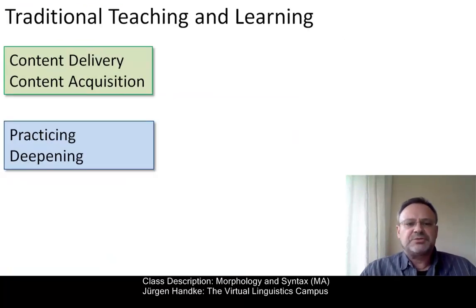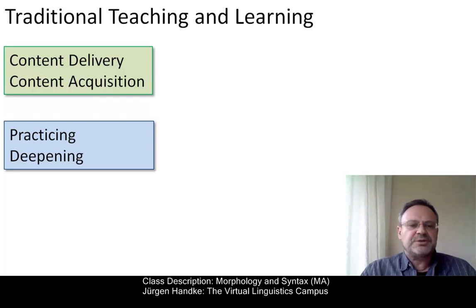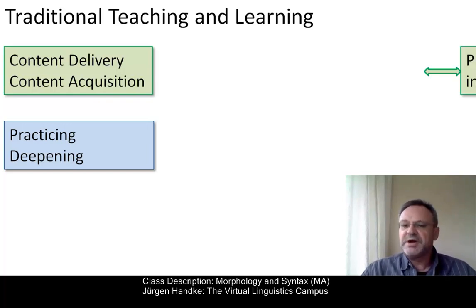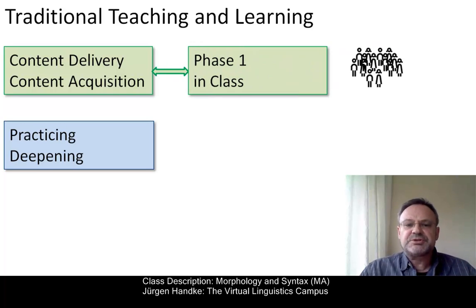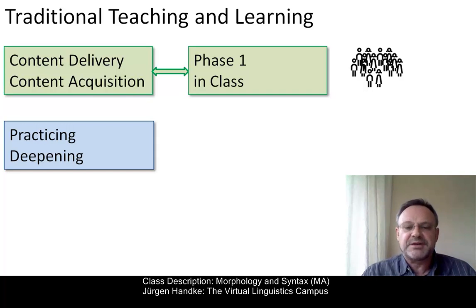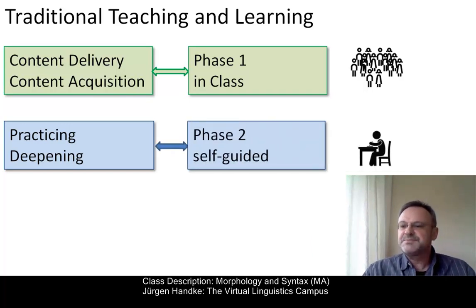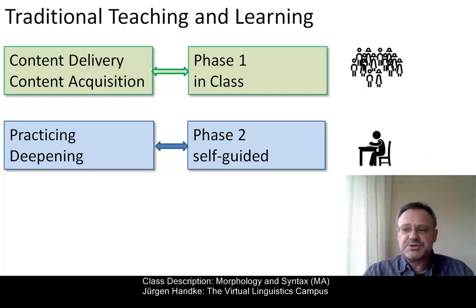In traditional teaching and learning, content delivery and content acquisition are realized in class, where several dozen students have to gather at the same time to be entertained by their teacher. In a second phase, students practice on their own, on the basis of additional exercise material, homework tasks, etc.